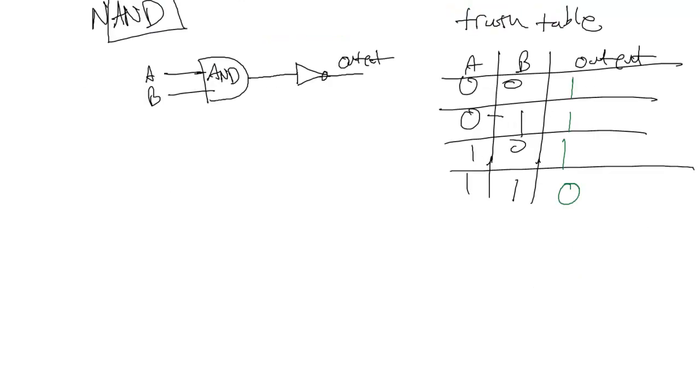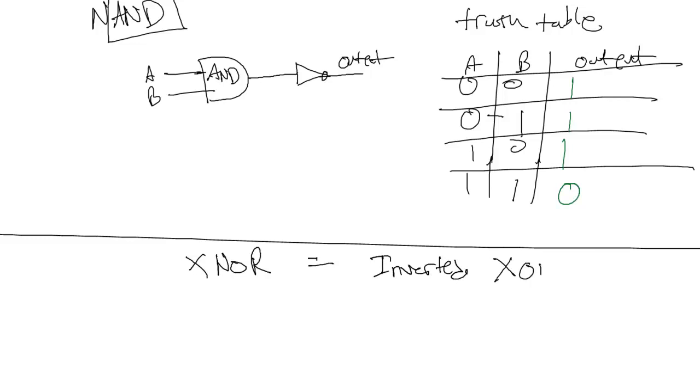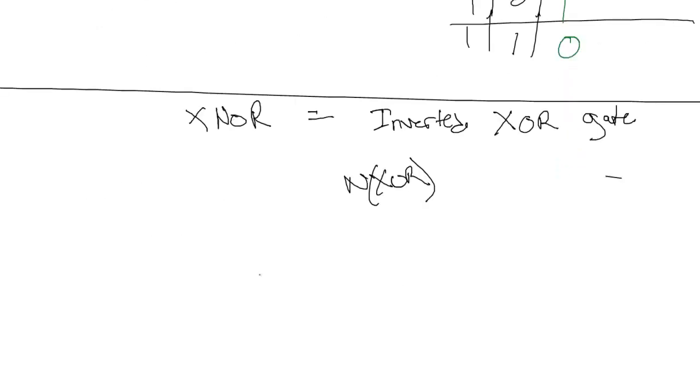And one thing I want to mention is the naming convention for XNOR. That's really an inverted XOR gate. It makes more sense to me to call it an NXOR, like all the other gates, but I guess you can't pronounce NXOR, so it's called XNOR.